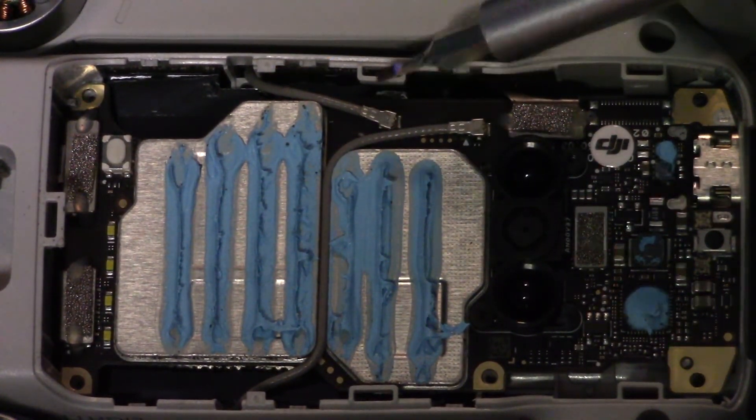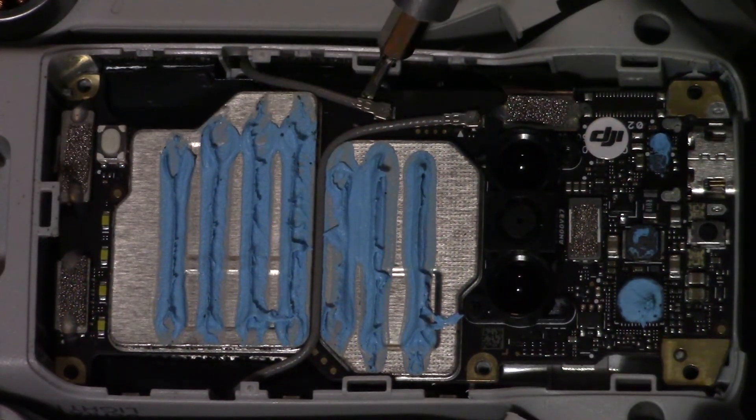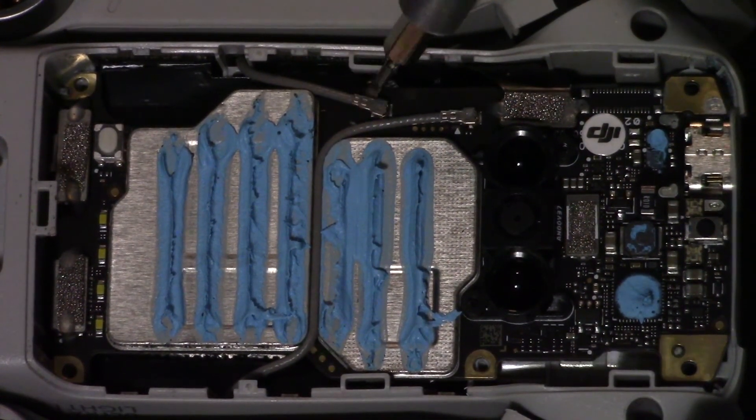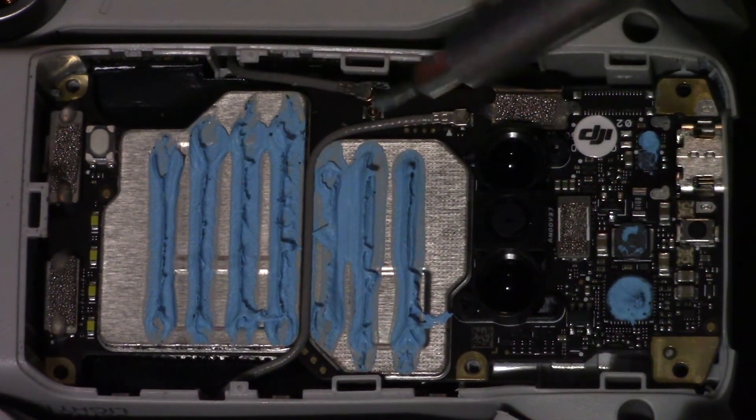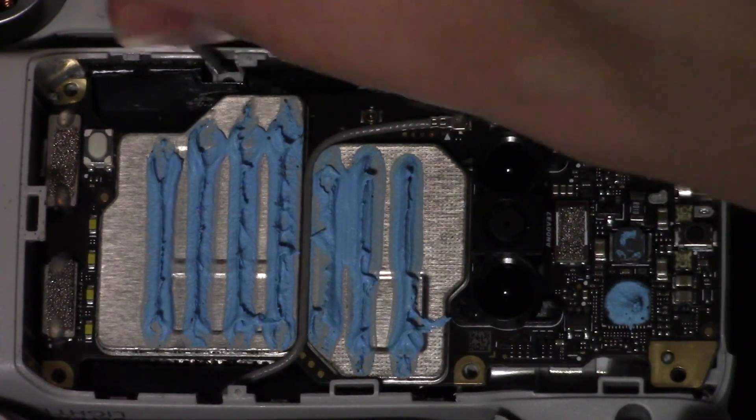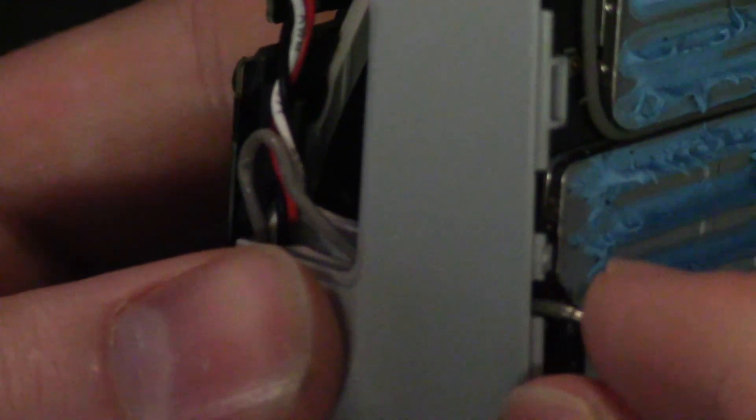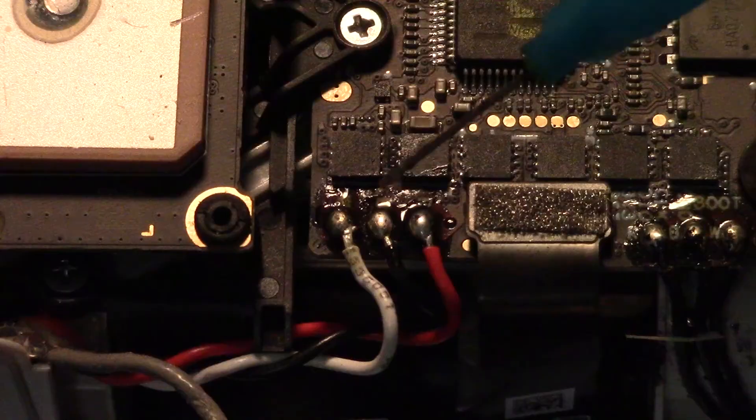There is thermal paste on the bottom of this, so try not to touch it or smudge it. The left and right arm antennas connect on the bottom and they are different, so make sure whichever arm you're taking off, you're taking off the correct antenna. There are also different lengths, so more on that later. You might need tweezers to pull it out because it's hard to take out.